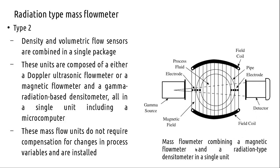Such a combined device can integrate a magnetic flow meter with a radiation-type densitometer in a single unit. You can also have an ultrasound flow meter combined this way. For hobby projects, hall effect sensors are commonly used for flow measurement as they are more manageable. That completes the radiation type of mass flow meter, where radiation refers to gamma radiation.